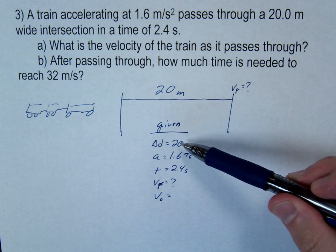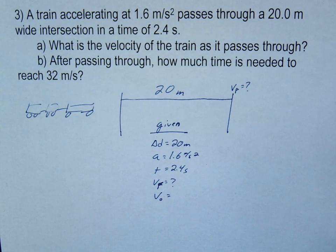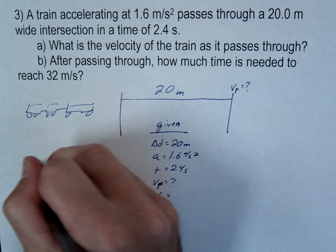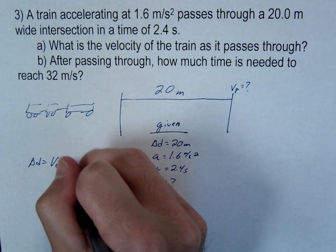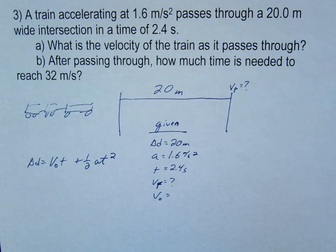So, which equation is going to work for us? Delta D, A, T, the initial. The one with the T squared? Yeah, delta D equals V naught T, plus one-half A T squared. All right, let's do that one.